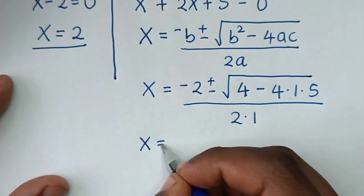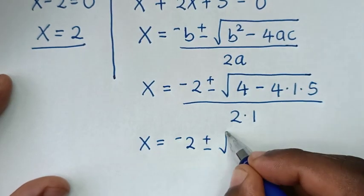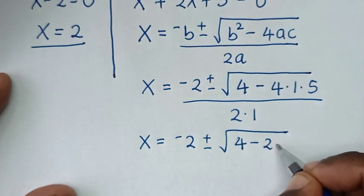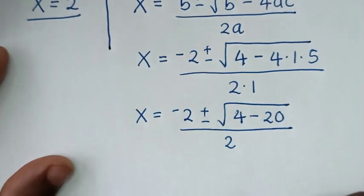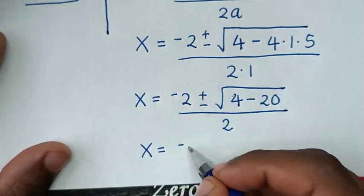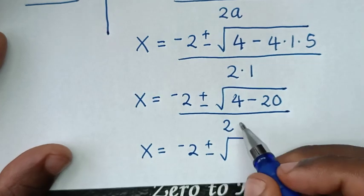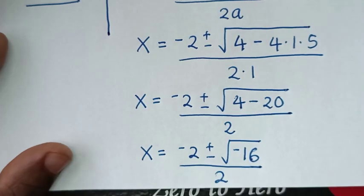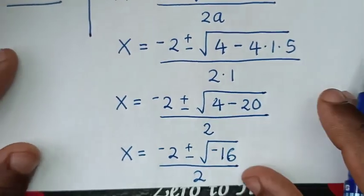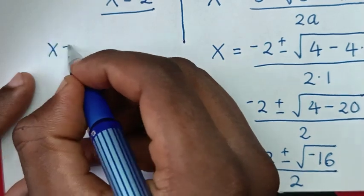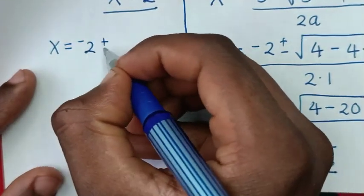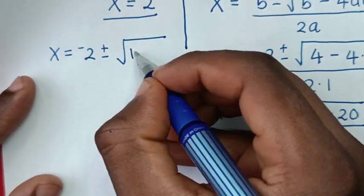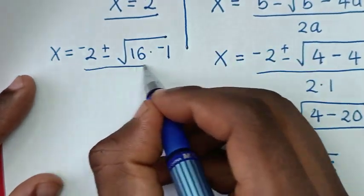Then it will be x equals negative 2 plus or minus square root of 4 minus 4 times 1 times 5 which is minus 20, over 2. So x equals negative 2 plus or minus square root of 4 minus 20, which is minus 16, over 2. Then square root of negative 16 is the same as square root of 16 times negative 1, over 2.